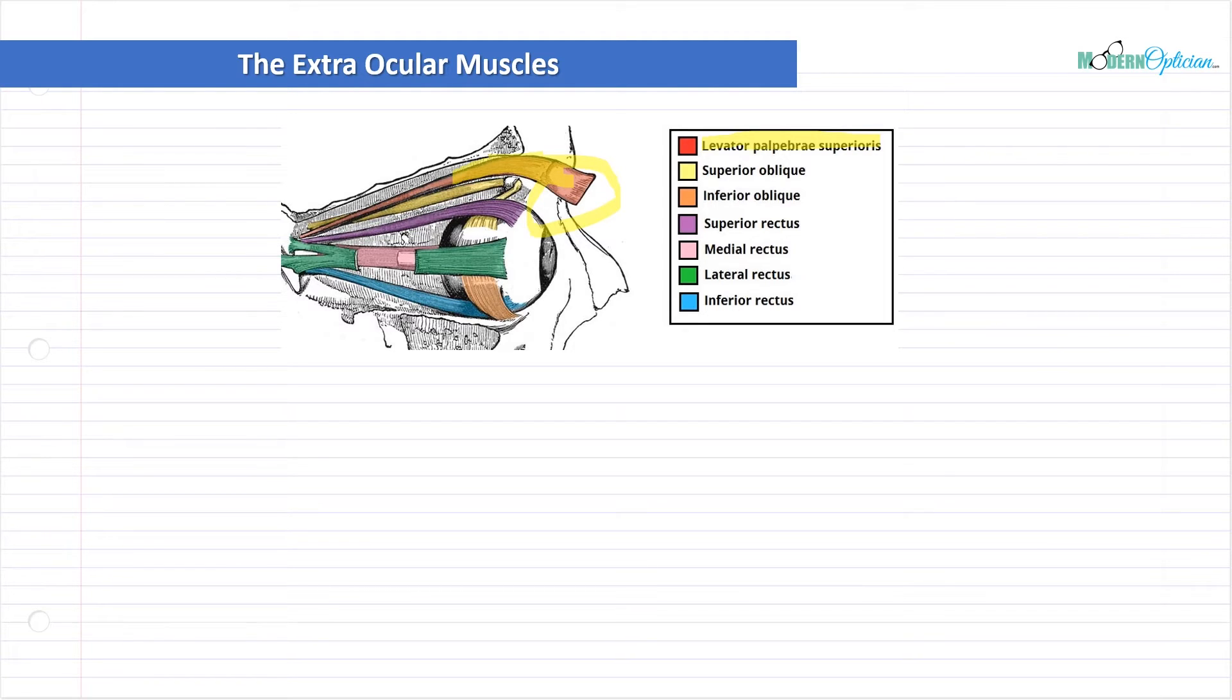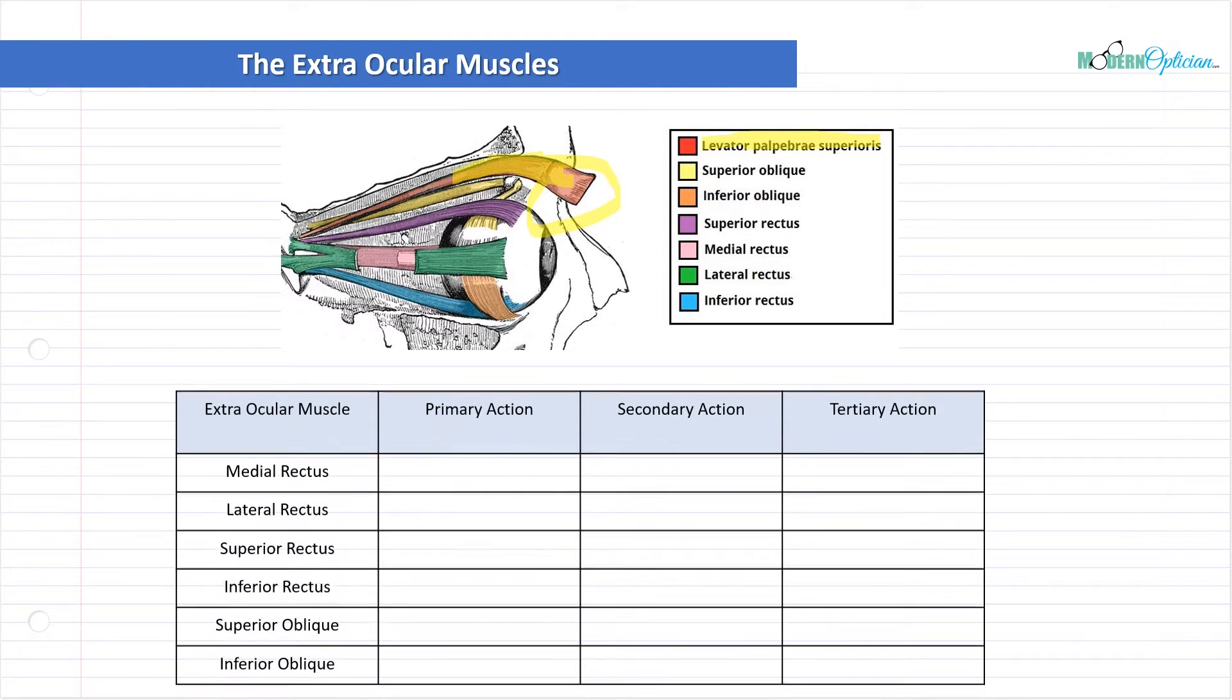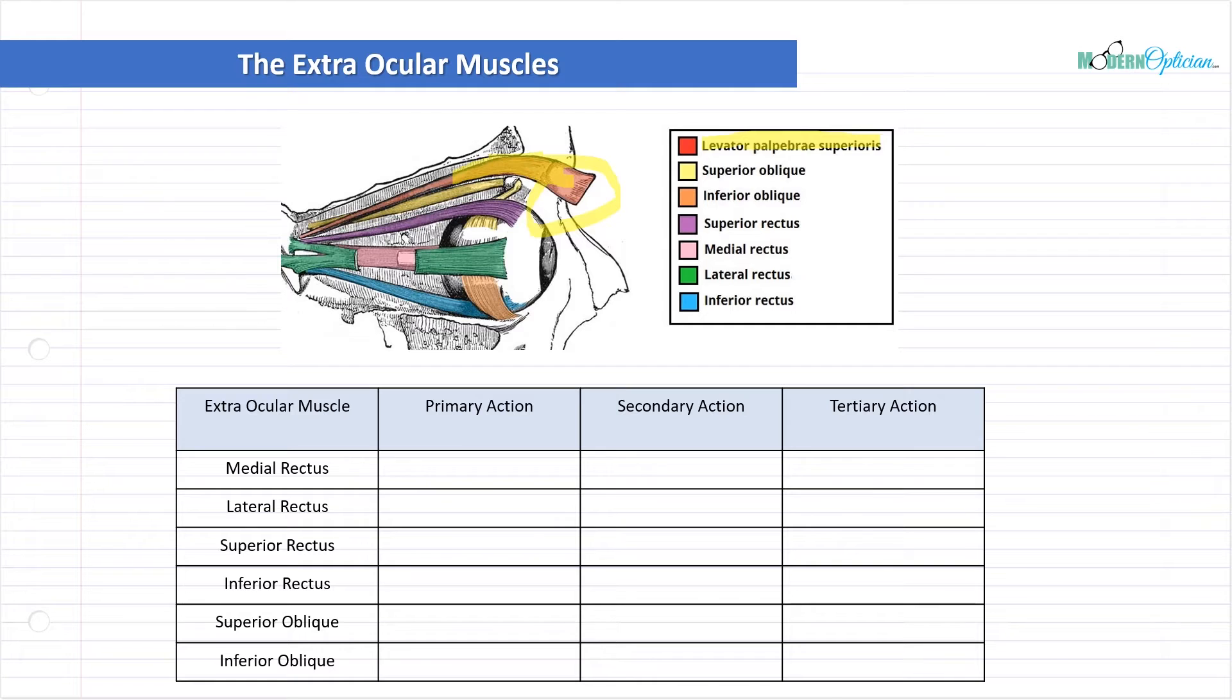From top to bottom, we've got the superior oblique in yellow, the inferior oblique that wraps around, the superior rectus in purple, the medial rectus in pink, and the lateral rectus in green has been cut so you can see the medial rectus behind it, and the inferior rectus at the bottom. Notice that the words superior, inferior are in play because the superior oblique is at the top, the superior rectus is at the top, and the inferior rectus at the bottom, as well as the inferior oblique.